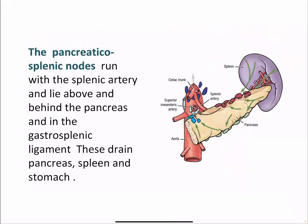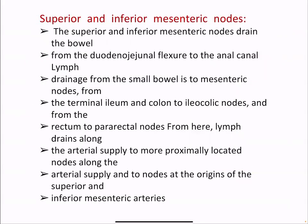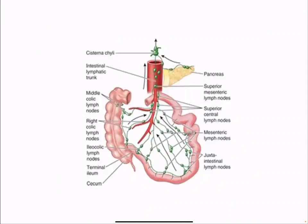Superior and inferior mesenteric lymph nodes drain the bowel from the duodenojejunal flexure to the anal canal. Lymph drainage is from the small bowel to mesenteric nodes, from the terminal ileum and colon to the ileocolic nodes, and from the rectum to the pararectal nodes. From there, lymph drains along the arterial supply to more proximally located nodes at the origin of the superior and inferior mesenteric arteries. The mesenteric nodes include superior central, juxtaintestinal, terminal ileum, ileocolic, right colic, and middle colic nodes, all of which drain into the cisterna chyli.